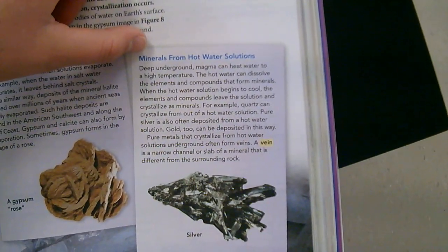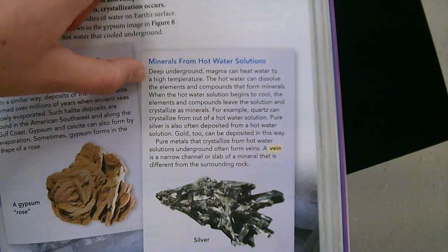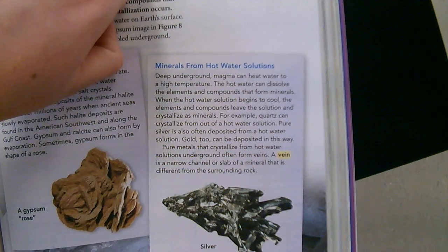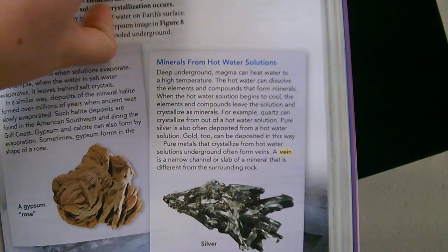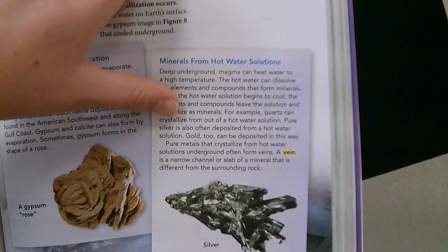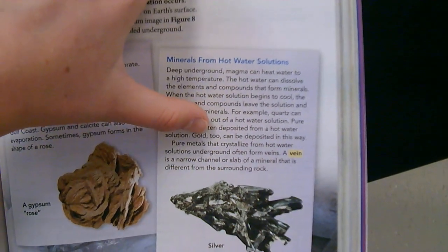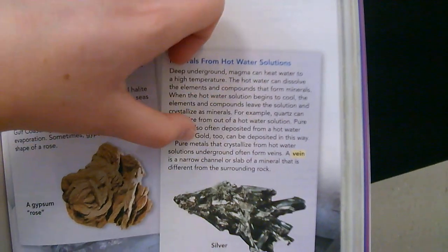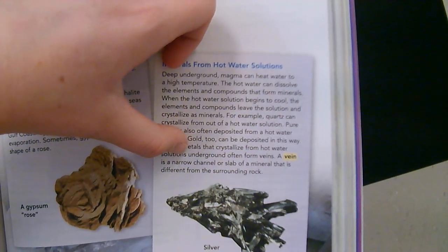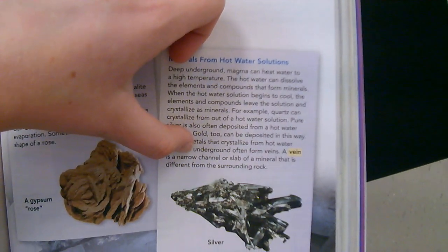Minerals from hot water solutions. Deep underground, magma can heat water to a high temperature. The hot water can dissolve the elements and compounds that form minerals. When the hot water solution begins to cool, the elements and compounds leave the solution and crystallize as minerals. For example, quartz can crystallize from a hot water solution. Pure silver and gold can also be deposited from a hot water solution. Pure metals that crystallize from hot water solutions underground often form veins — a narrow channel or slab of mineral that is different from the surrounding rock.